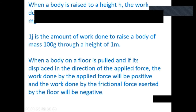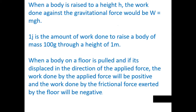When a body is raised to a height H, the work done against the gravitational force is W = MGH. One Joule is the amount of work done to raise a body of mass 100 grams through a height of 1 meter. Joule is the unit of work done.